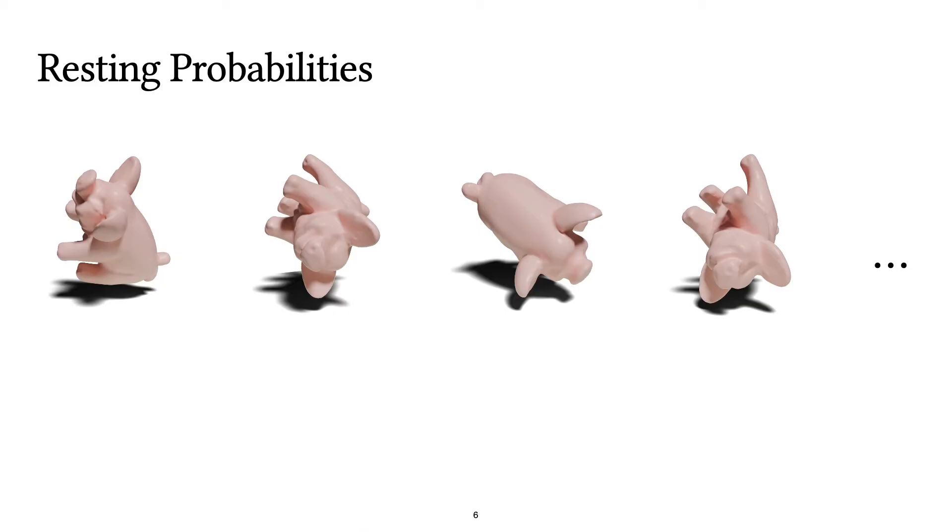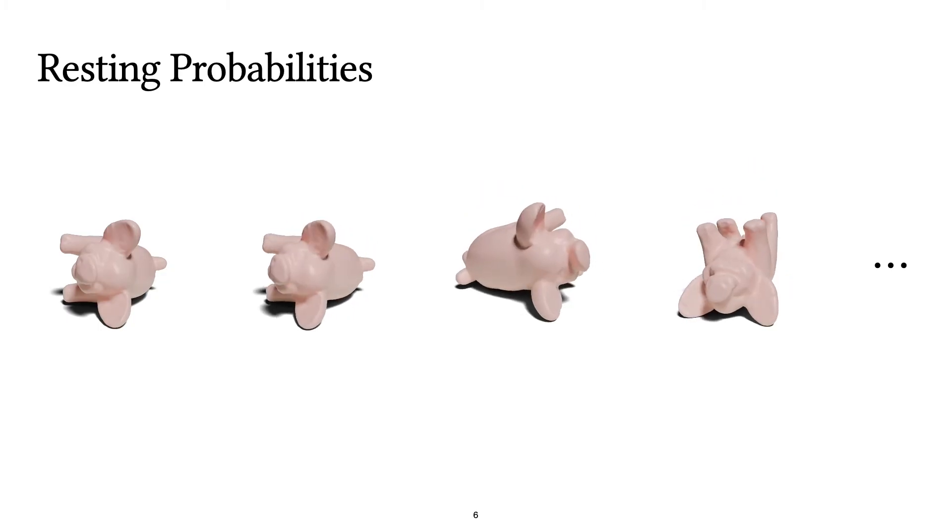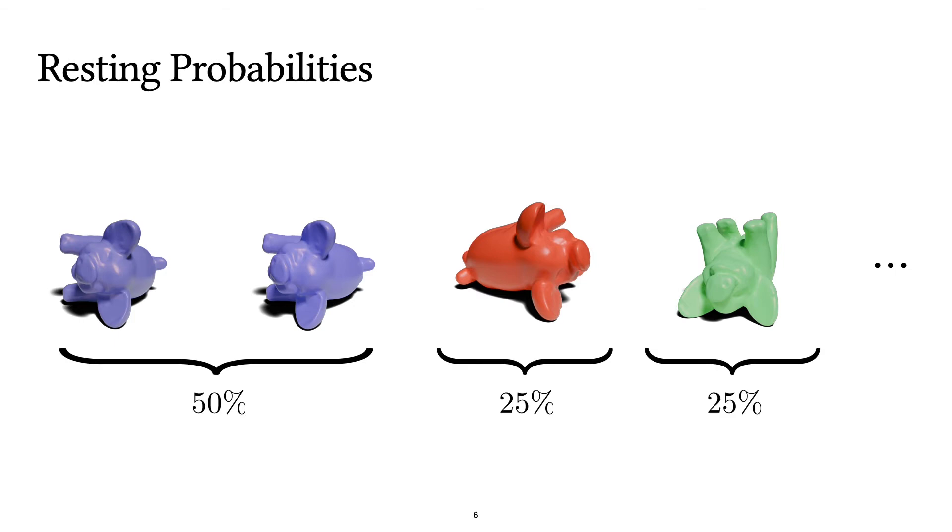Here's the problem setup. Imagine you rotate the object randomly and let it fall on the ground. Then the ratio of these falls that end up at the same resting orientation correspond to the probability of that resting orientation.